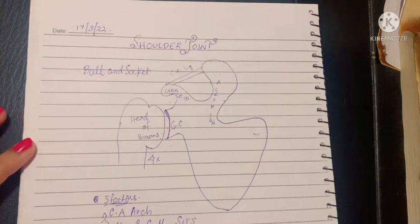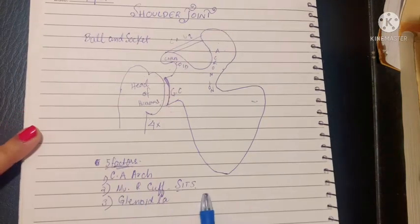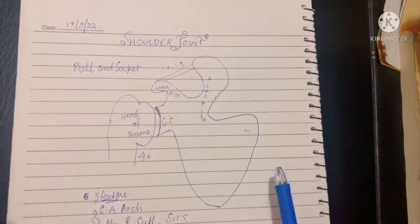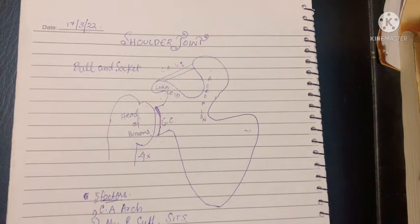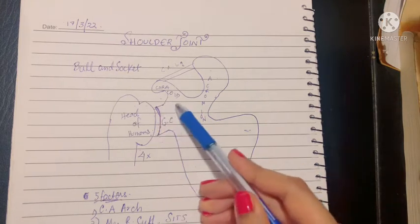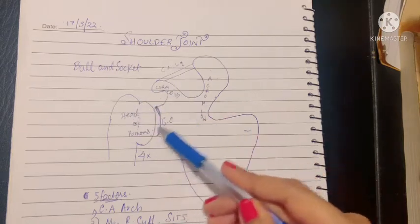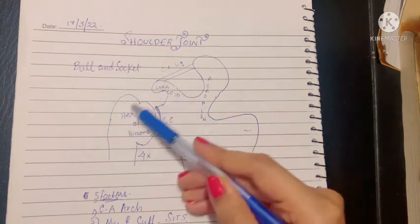The second factor is the musculotendinous cuff or the rotator cuff muscles. These were the SITS muscles that we've studied in the scapular region chapter. These muscles are the subscapularis, infraspinatus, teres minor, and the supraspinatus muscles. These muscles had tendons that were blending in the capsule of shoulder joint and causing strengthening of the capsule of the shoulder joint.